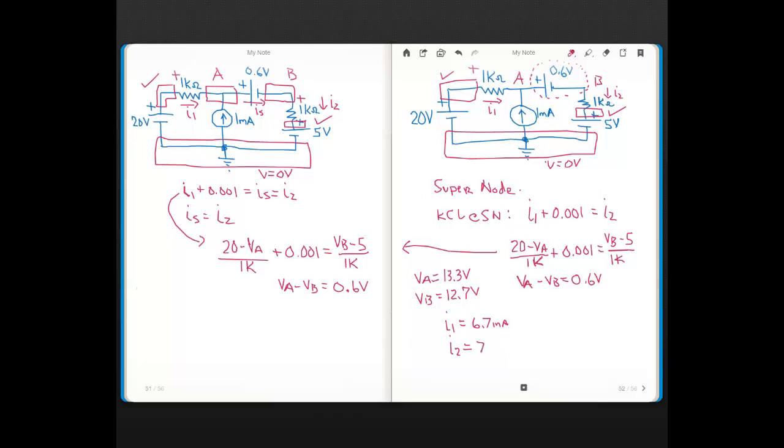And do those numbers make sense? Well, if you do a KCL equation at node A here, you got 1 milliamp flowing in, and you got 6.7 milliamps flowing in, so you better have 7.7 milliamps flowing out, right? So the current I2 that's flowing through this 1K, the 7.7 milliamps, that's the same current through this 0.6 volt source, because they're in series. They have the same path, also it's the same current through the 5 volt, because this is all one path here, these three components.